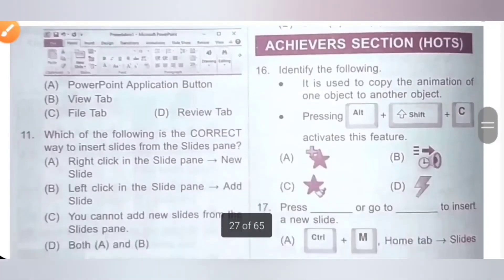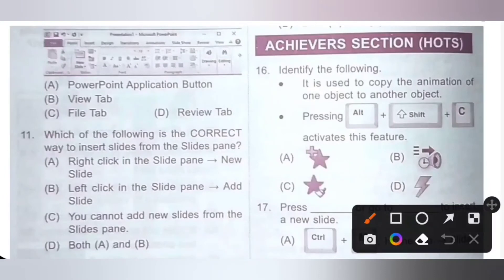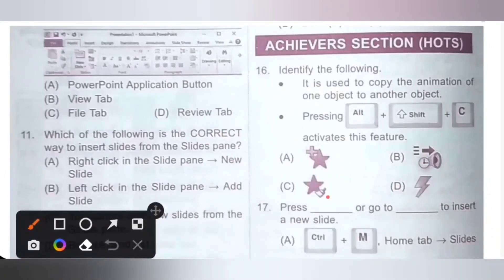Achiever section, sixteenth one. Identify the following: it is used to copy the animation of one object to another object, and pressing Alt+Shift+C activates this feature. This is the animation painter. Option C is the correct answer.